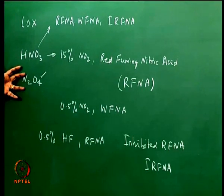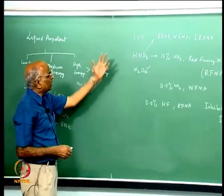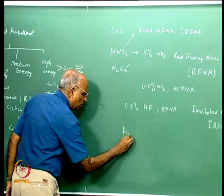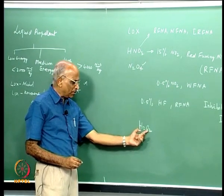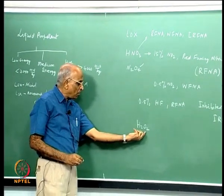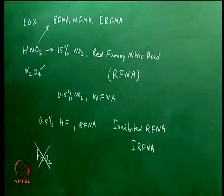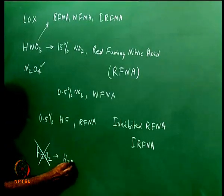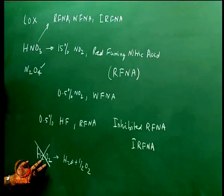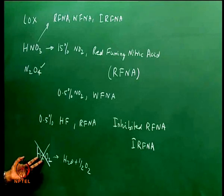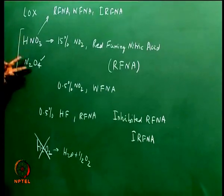While nitric acid in forms RFNA, WFNA, and IRFNA was used extensively by defense, the preferred oxidizer now is N₂O₄ because of its slightly positive heat of formation making it more energetic. H₂O₂ is also sometimes discussed as an oxidizer since it has excess oxygen, but it has a very negative heat of formation of about minus 180 kJ/mol, making it a mild oxidizer. H₂O₂ can directly dissociate into H₂O plus half O₂ exothermically, so it is used more as a monopropellant rather than as a liquid oxidizer.